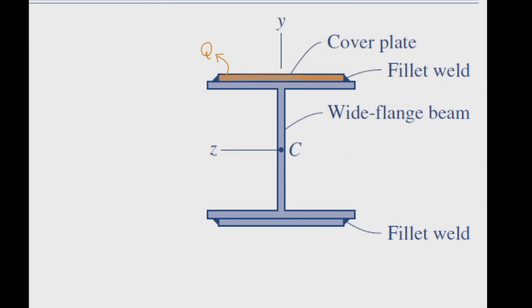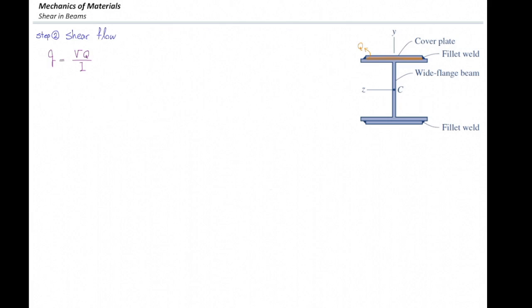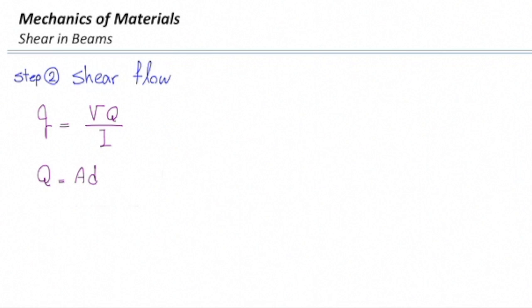So we calculate q for that top plate of that section. The shear flow would be VQ over I. The big Q is area times distance, area of that plate which is 200 by 10, and distance would be this one. And the moment of area would be 267,000 millimeters cubed.